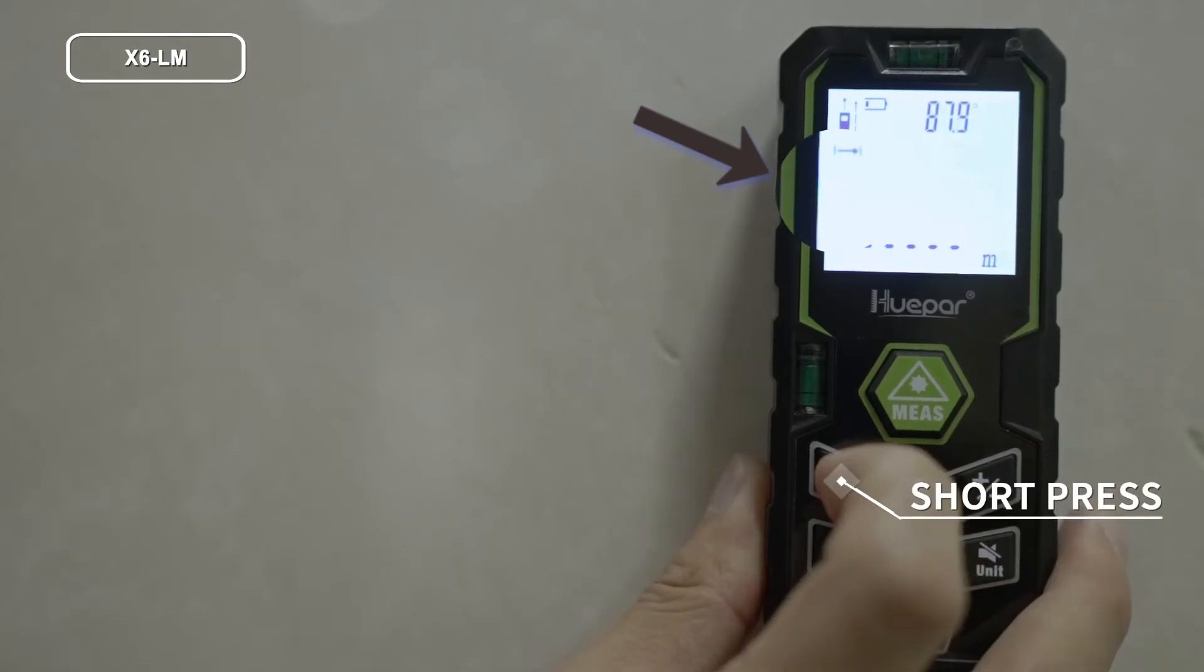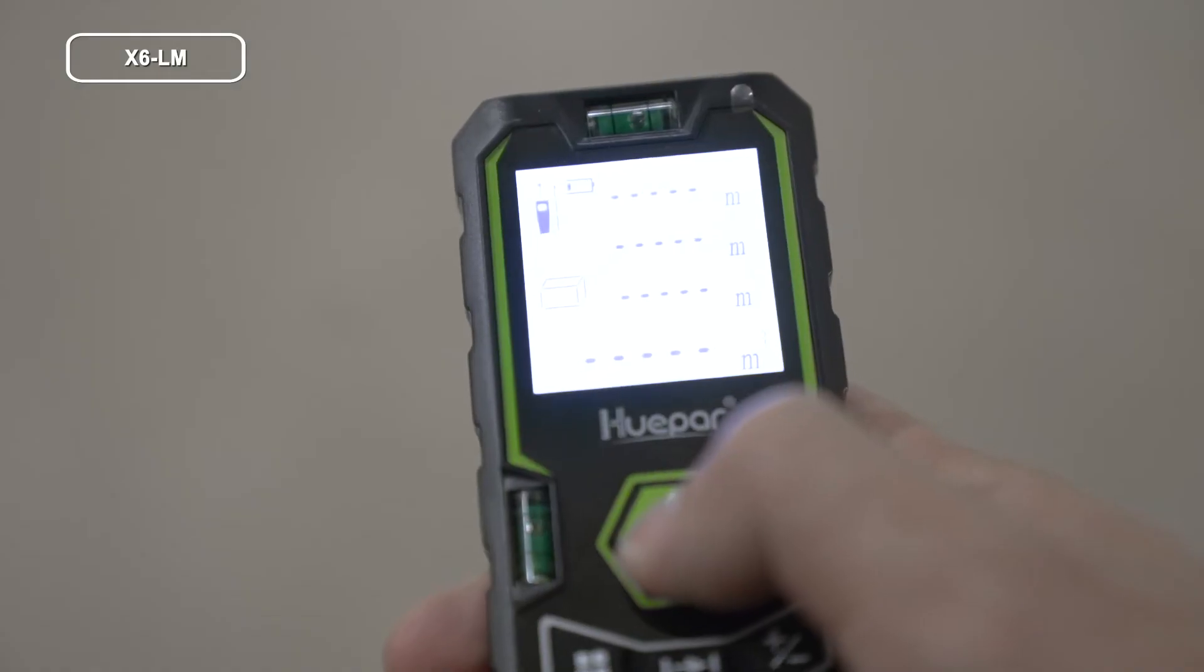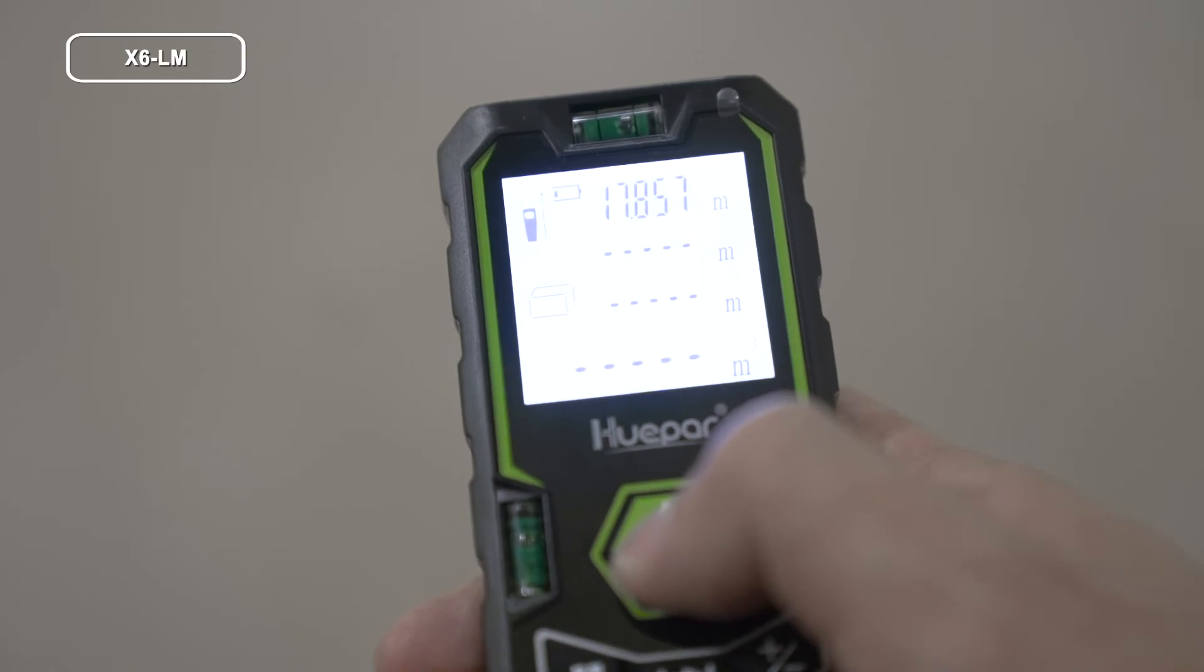Press this twice. The symbol appears in the function field on the display. Press MES to take the first distance measurement, like length.